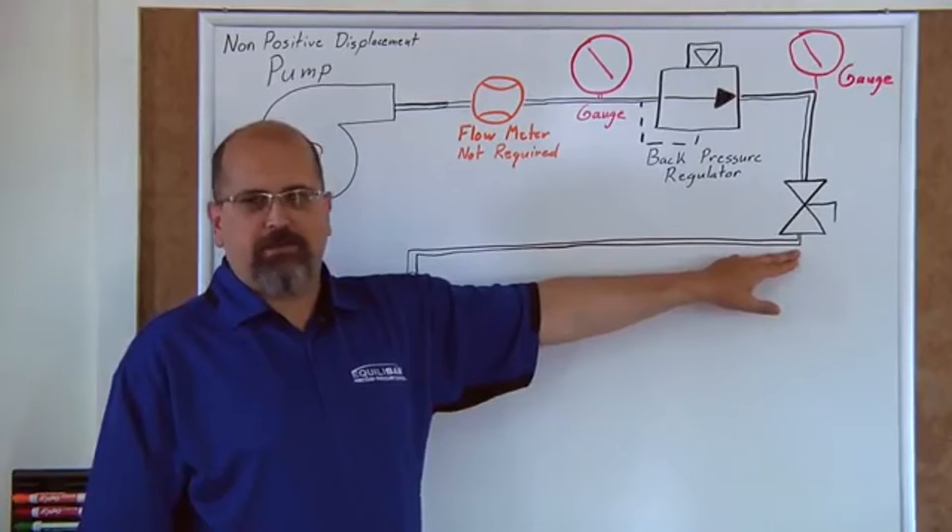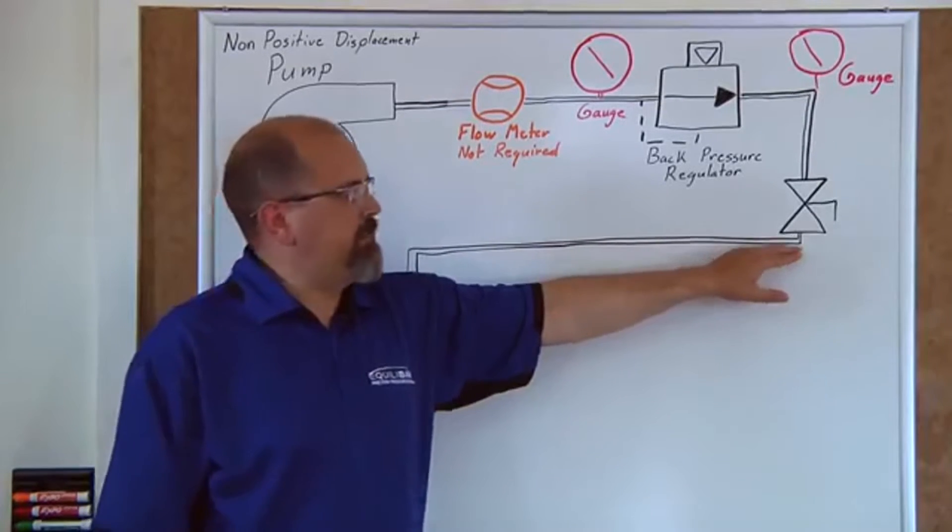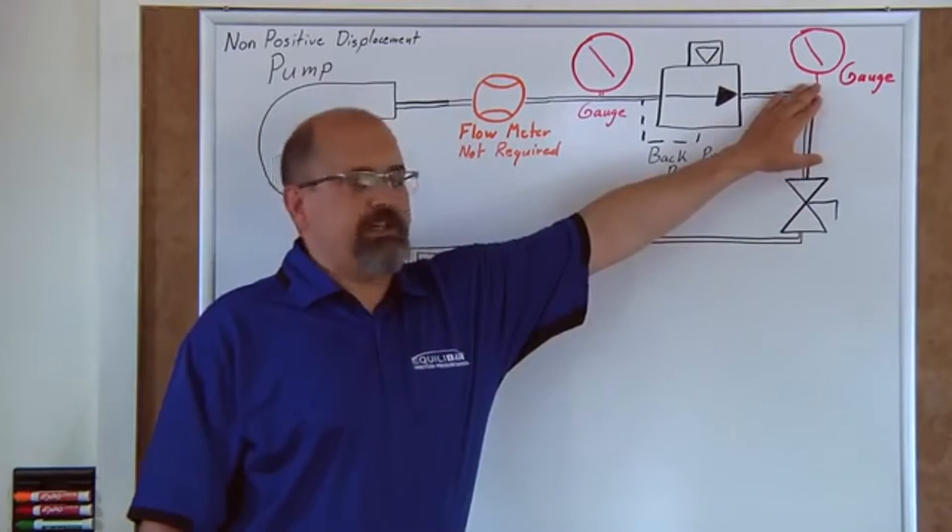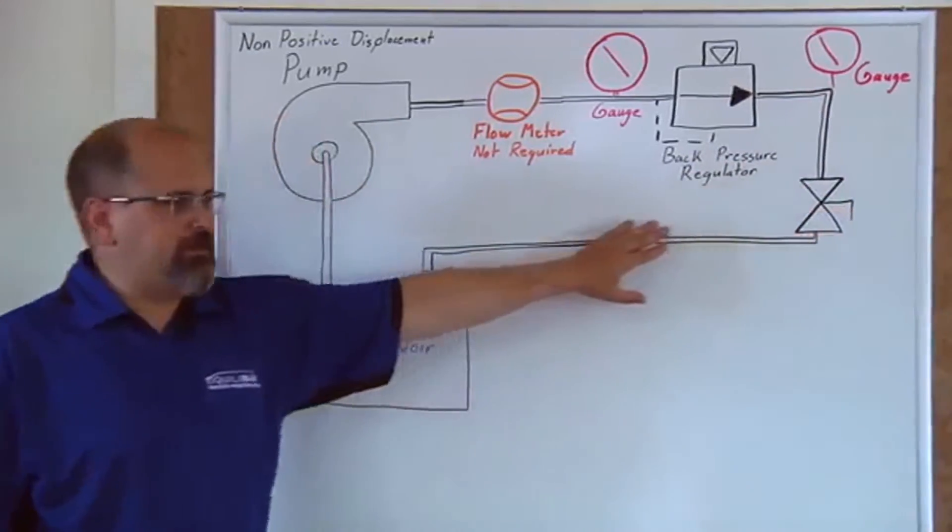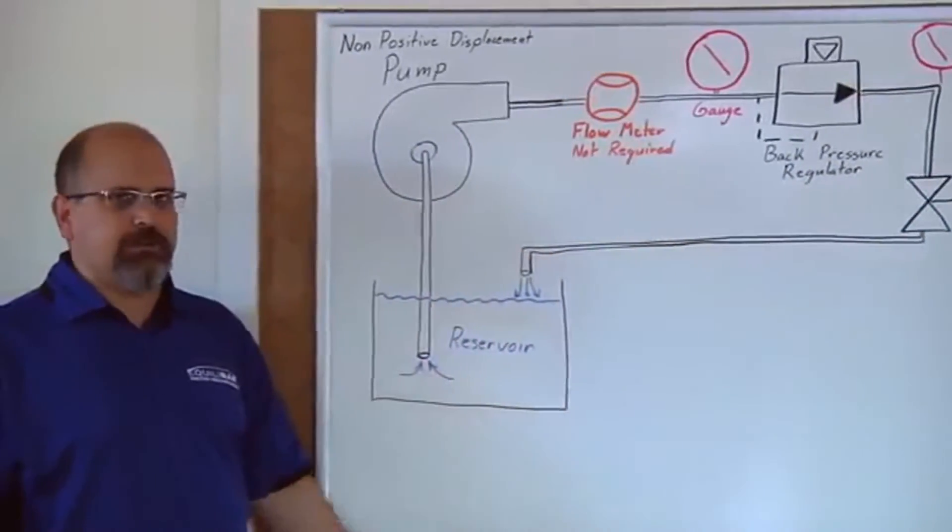The system here will be represented by a gate valve, and I'll modulate that gate valve to show changes in the system. Those changes will be seen on yet another gauge on the output of the back pressure regulator. Once the water comes through the system, it will return back to the reservoir.